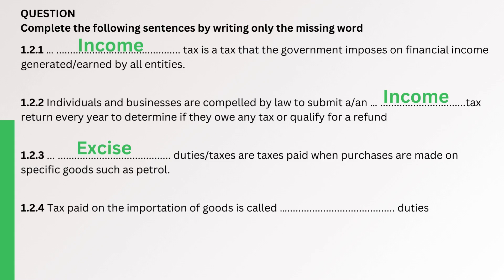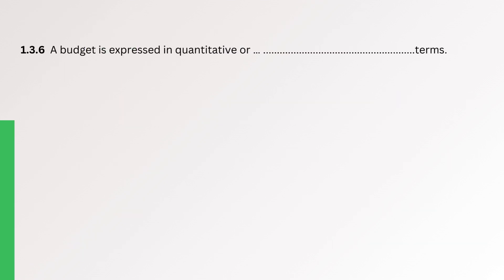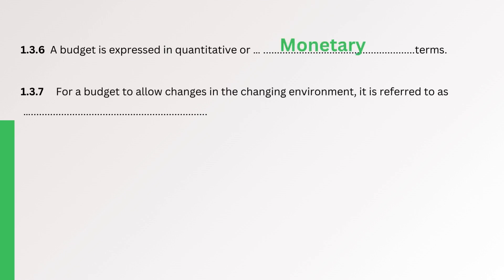Question. Tax paid on the importation of goods is called Customs duties. The correct answer is Customs. Question. Budgeting is a process of creating a plan to spend your money. The correct answer is Budgeting. Question. A budget is expressed in quantitative or monetary terms. The correct answer is Monetary. Question. For a budget to allow changes in the changing environment, it is referred to as Flexible. The correct answer is Flexible.